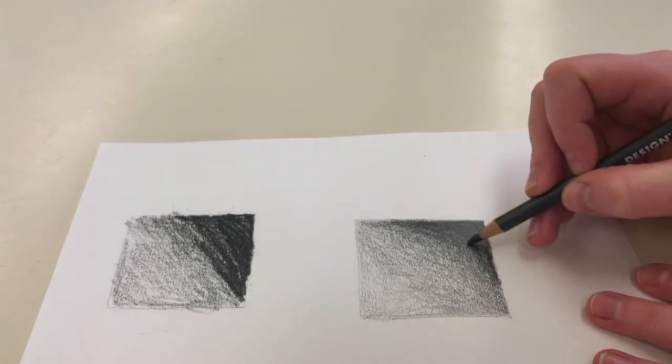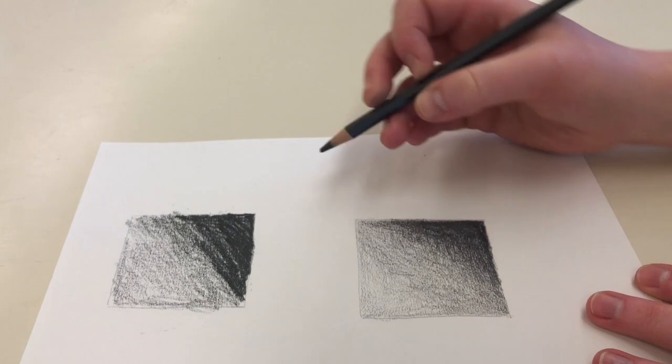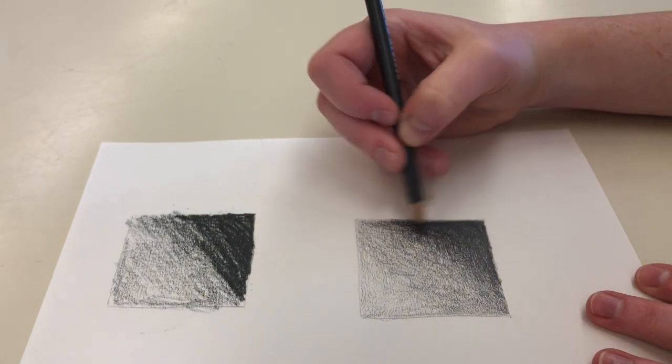In order to get rid of steps in between values what I like to do is very lightly brush my ebony pencil over where I see those lines in order to fade those lines.